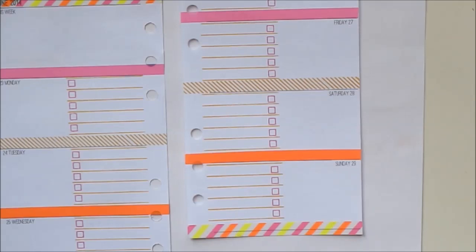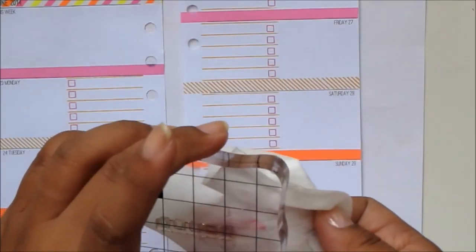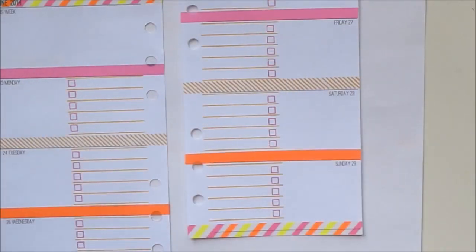You want to make sure you wipe your stamps off right away with a baby wipe or a wet cloth and have that dry off to the side before placing it back into the packaging.